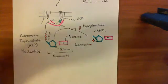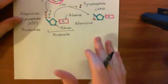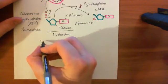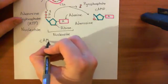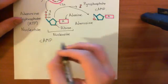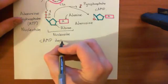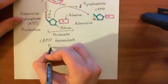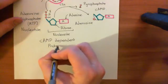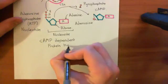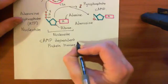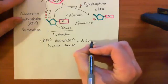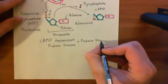Now, cyclic AMP is going to activate protein kinase A — or more properly, the name you'll hear in primary research papers or reviews — the cyclic AMP-dependent protein kinase. More commonly referred to by students as protein kinase A, which we'll refer to just as PKA.